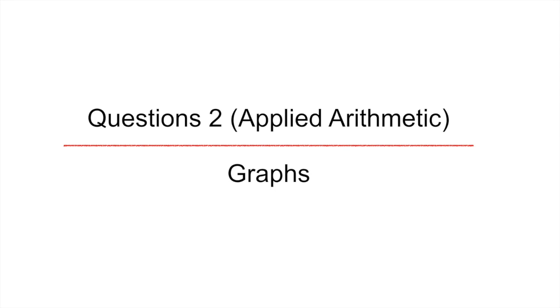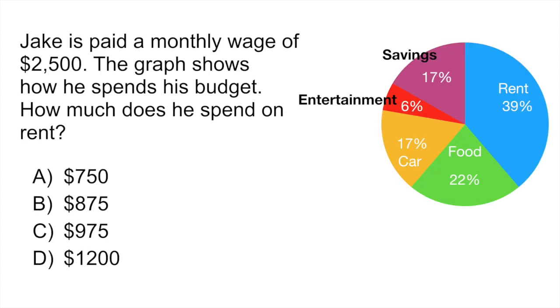Question two is an applied arithmetic problem and it has a graph to review. If you look at the pie graph you can see various slices and each represents money being spent on different household things. This person spends 39% on rent which is the blue slice, 22% on food which is the green slice, 17% on his car which is the yellow slice, etc.